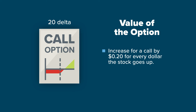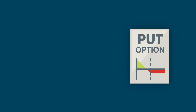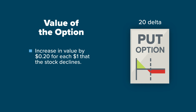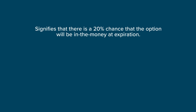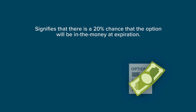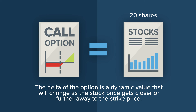Since an option contract equals 100 shares of stock, the value of the option should increase for a call by 20 cents for every dollar the stock goes up, and decrease for a call by 20 cents every dollar the stock goes down. Conversely, for a put whose delta is 0.2, or simply a 20 delta, its value should increase by 20 cents for each one dollar the stock declines, and decrease in value by 20 cents for each one dollar that the stock increases. It also signifies that there is a 20% chance that the option will be in the money at expiration. Another way to think of it is that the option is the equivalent value of 20 shares of stock, given the strike price and the current stock price. The delta of the option is a dynamic value that will change as the stock price gets closer or further away to and from the strike price.